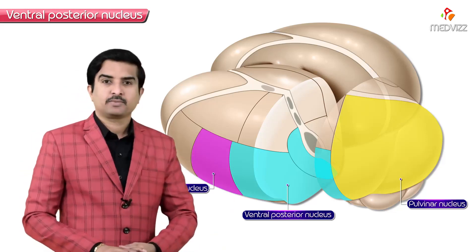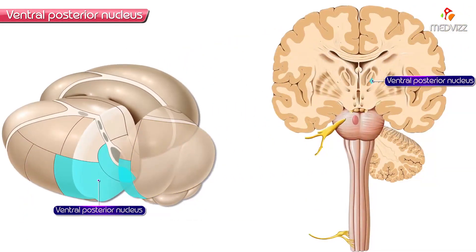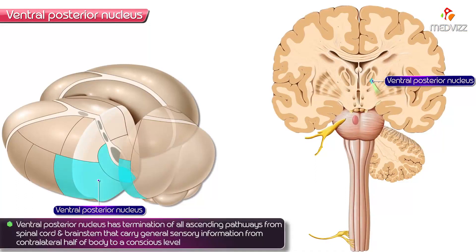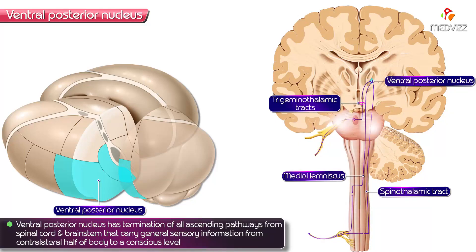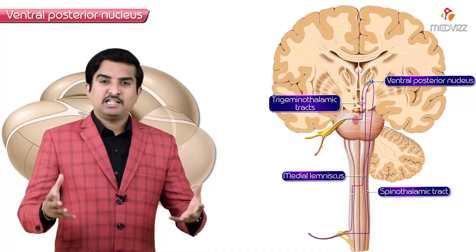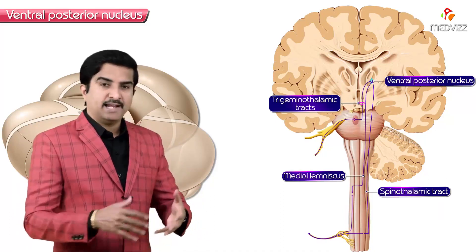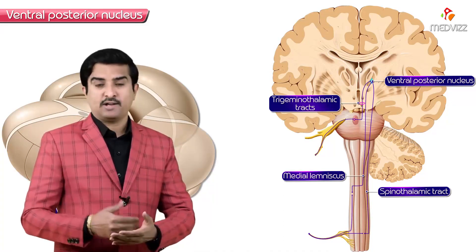Within the ventral posterior nucleus, there is a termination of the ascending pathways from the spinal cord and brainstem that carry general sensory information from the contralateral half of the body to the conscious level, that is, the cerebral cortex.